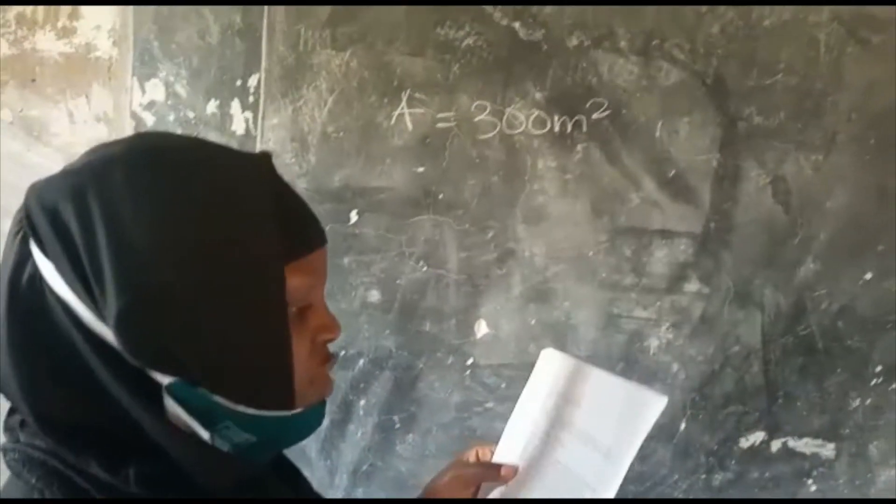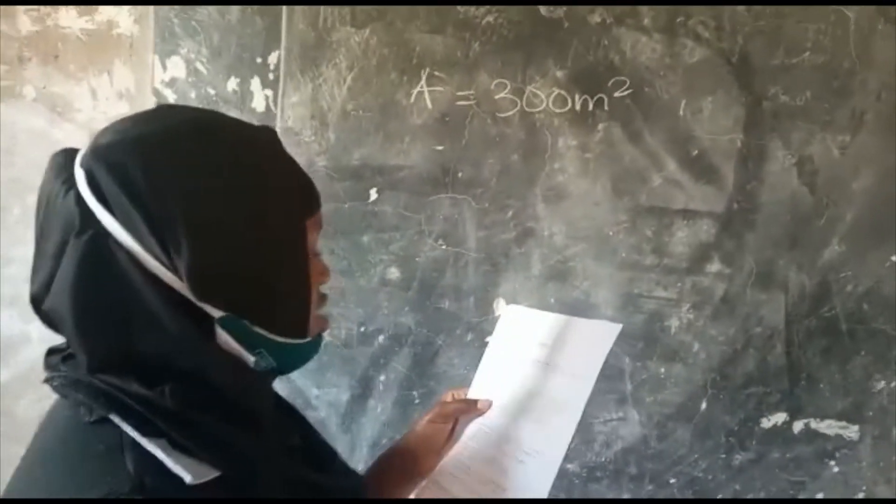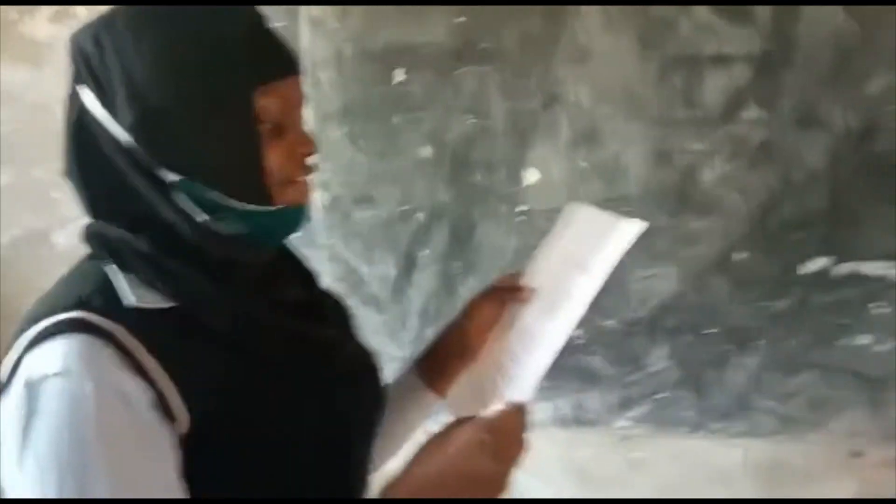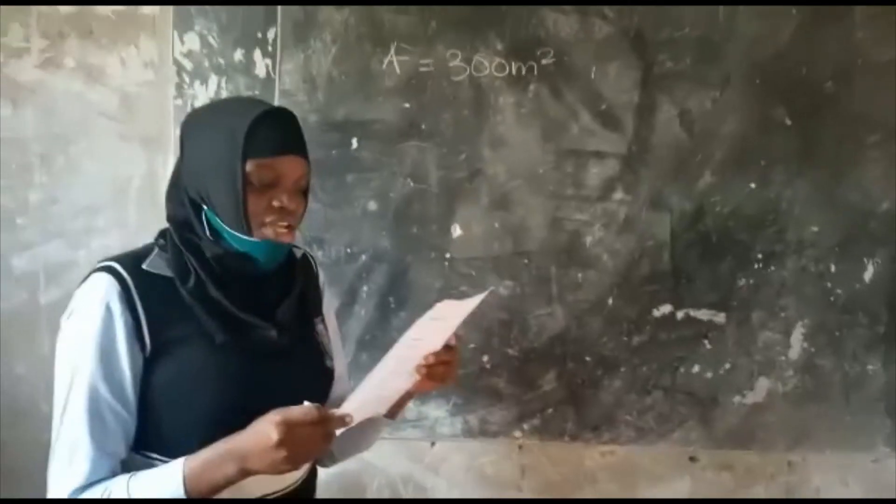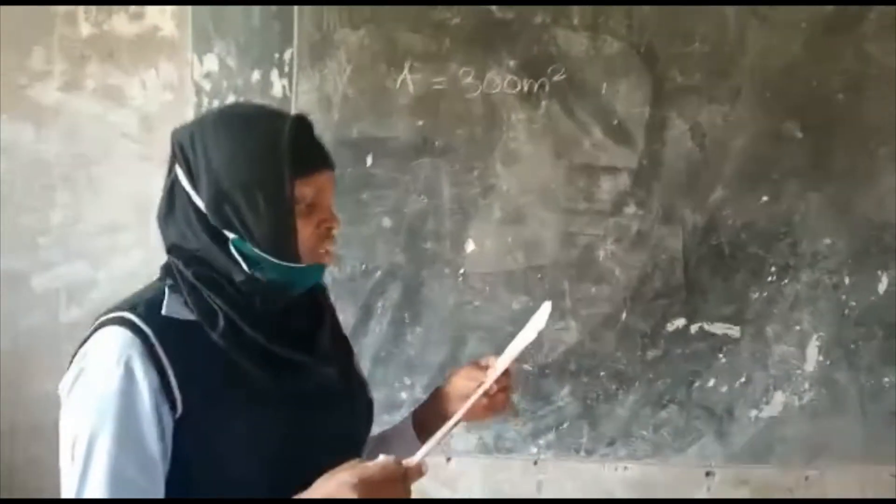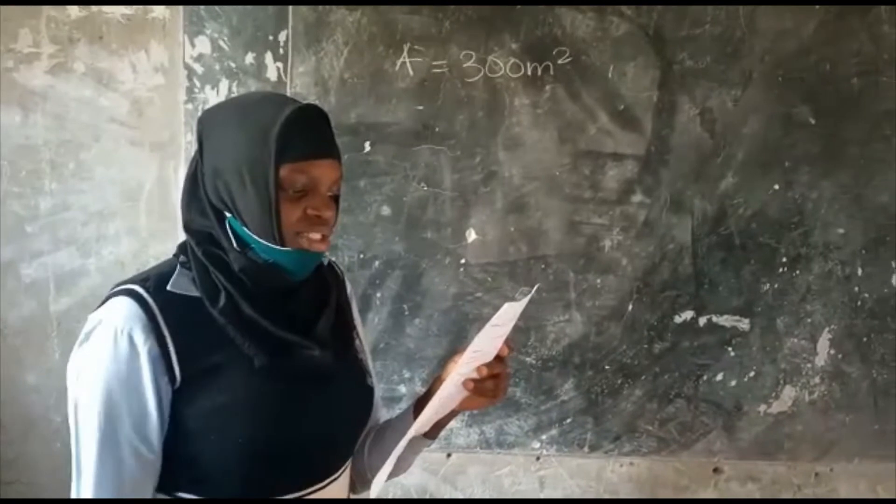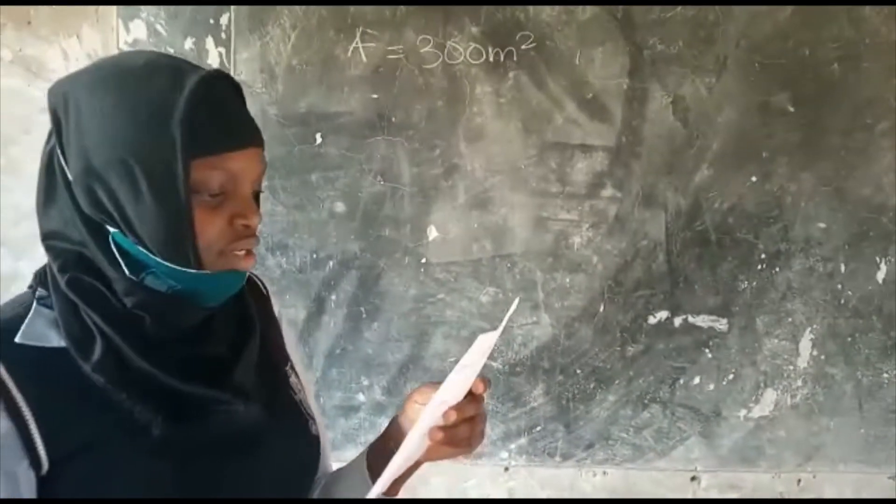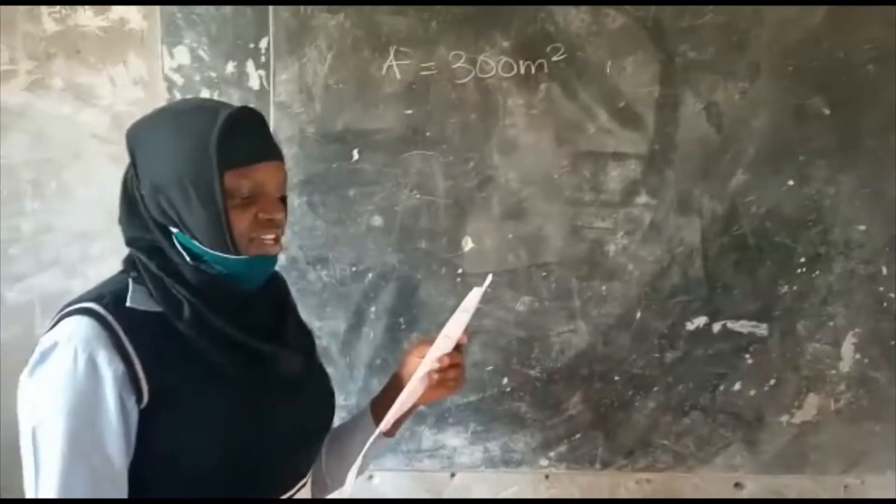A specimen of pond weed grows on the surface of the pond. At time t days after the weed is first discovered, it covers an area of A meters squared. The area of the pond covered by the weed increases at a rate which is proportional to the square root of the area of the pond already covered by the weed.